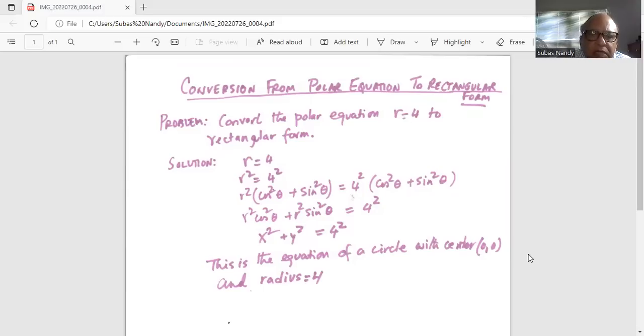Then we will multiply both sides of the equation by cosine squared theta plus sine squared theta. So we have r squared cosine squared theta plus r squared sine squared theta on the left hand side of the equation equal to four squared times cosine squared plus sine squared theta.